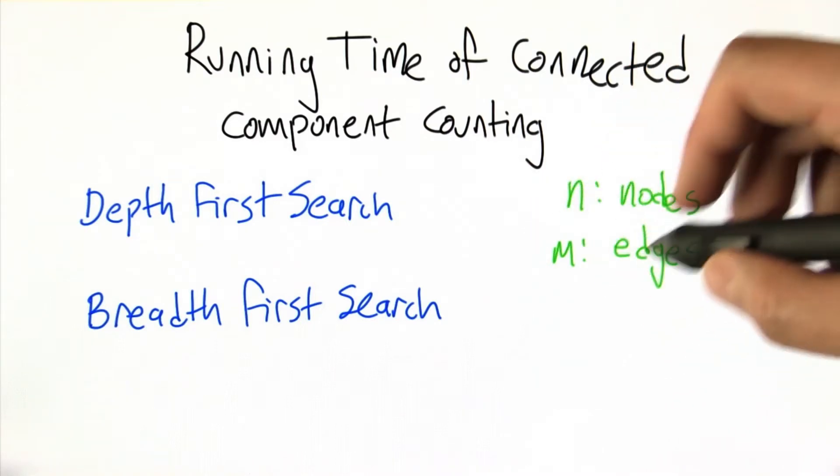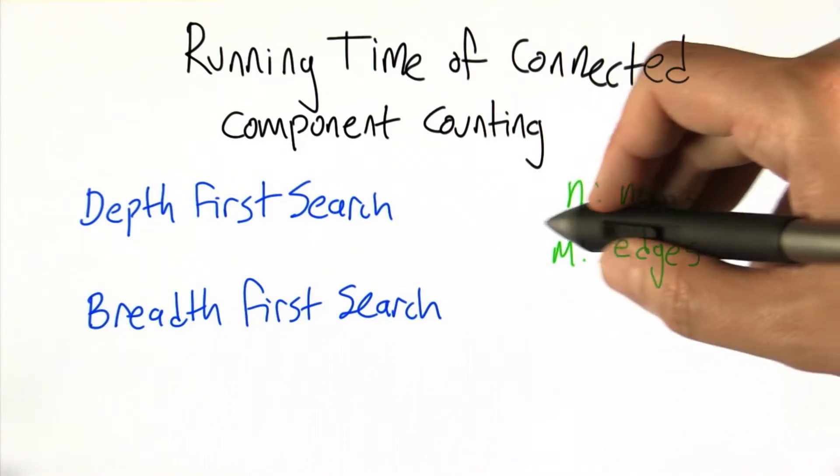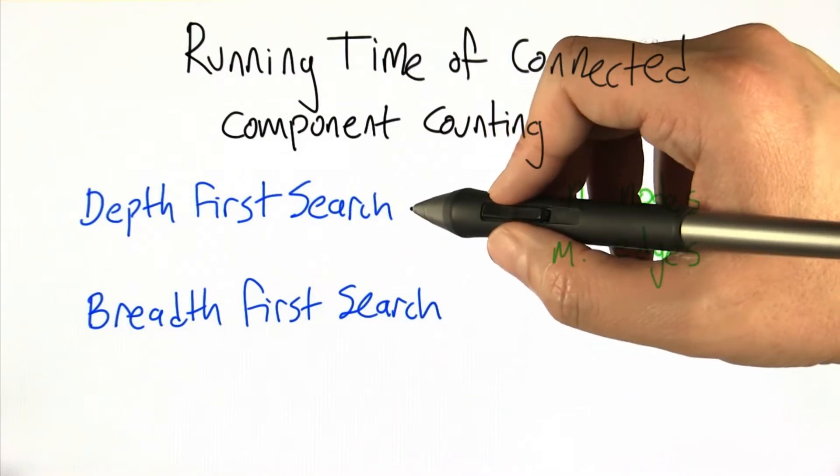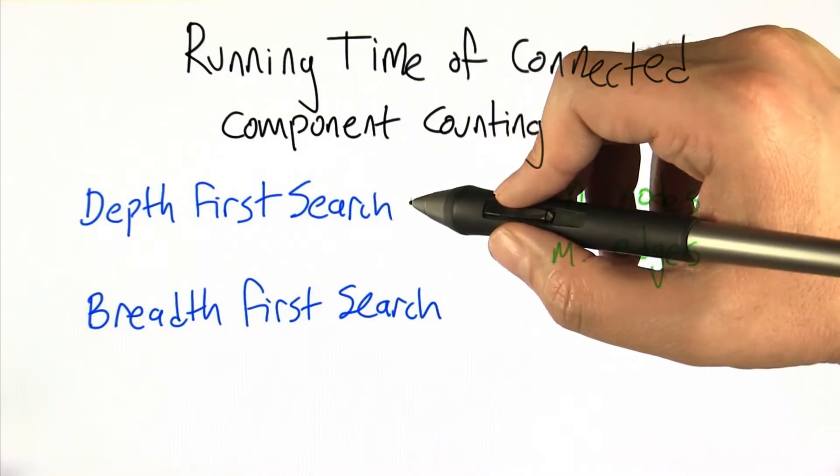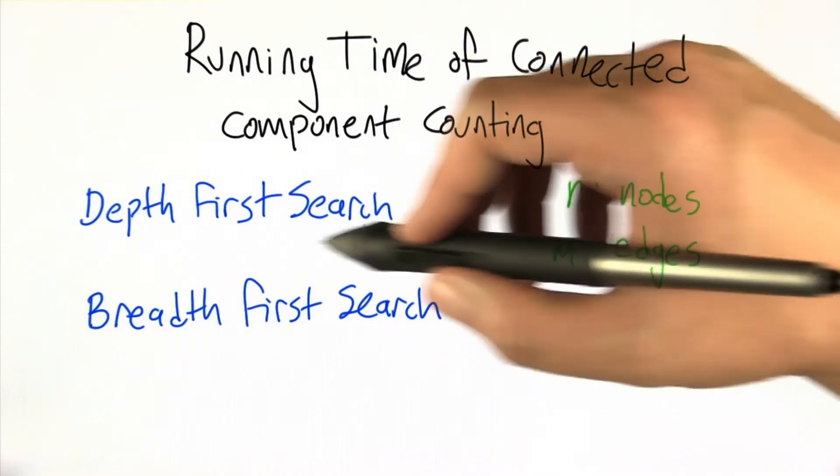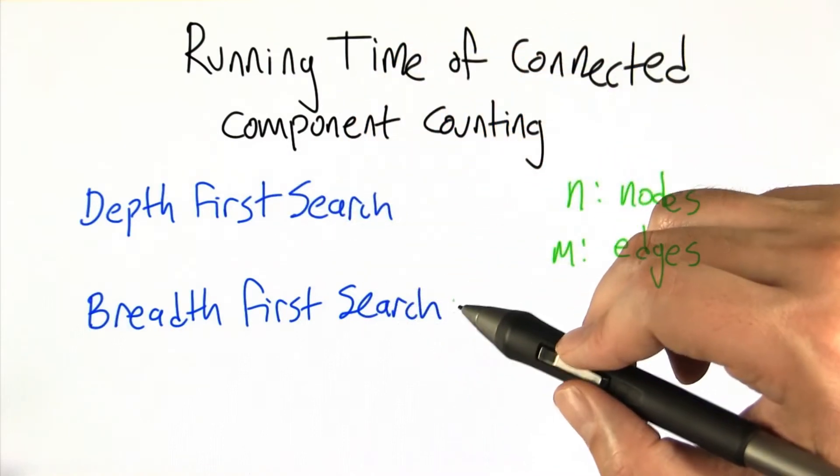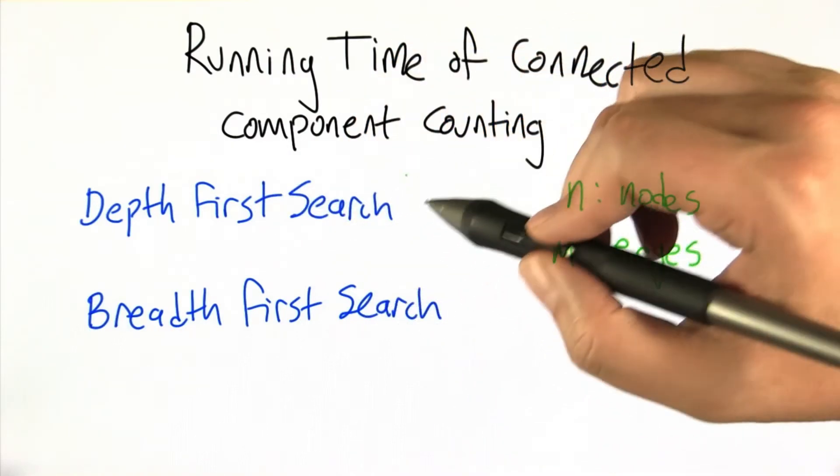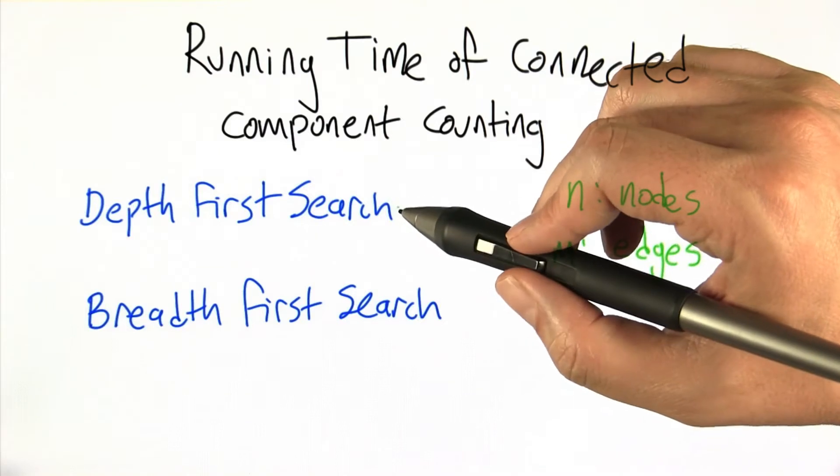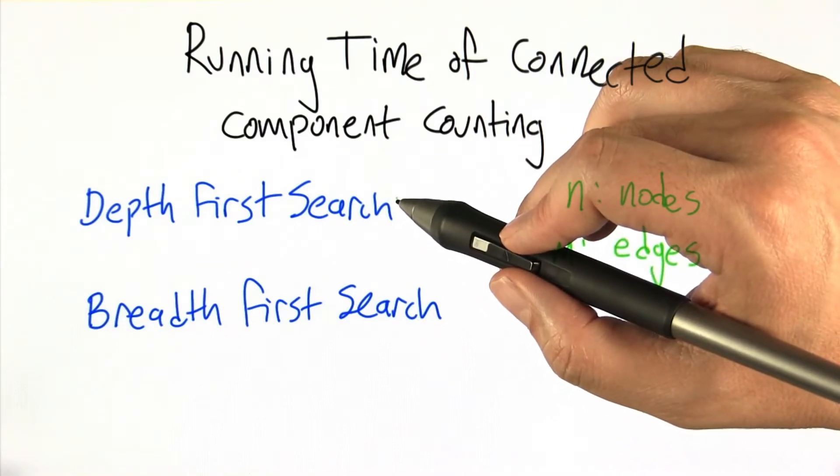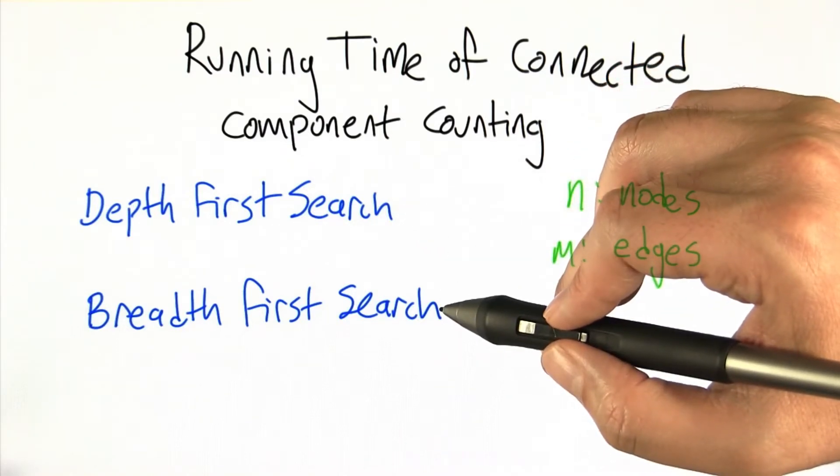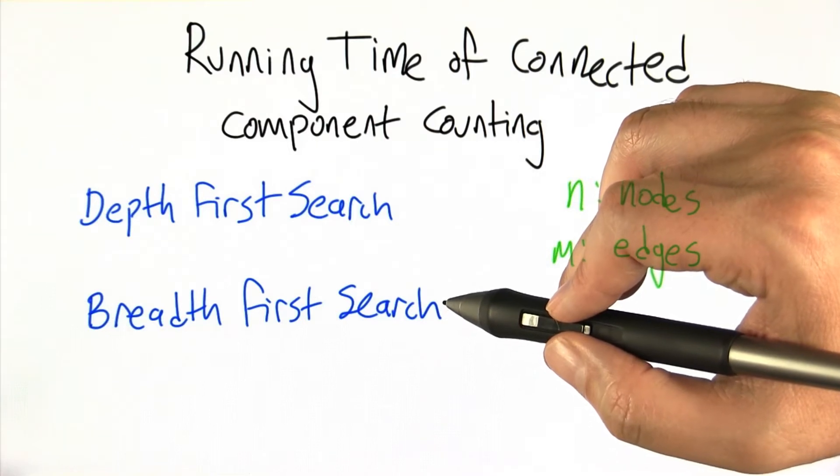It turns out that the basic strategy we use for this algorithm is a kind of graph search. There's two principal flavors of graph search: depth first search and breadth first search. This one that we've been talking about is a form of depth first search. Later we're going to see a version of breadth first search when we start looking at shortest paths.